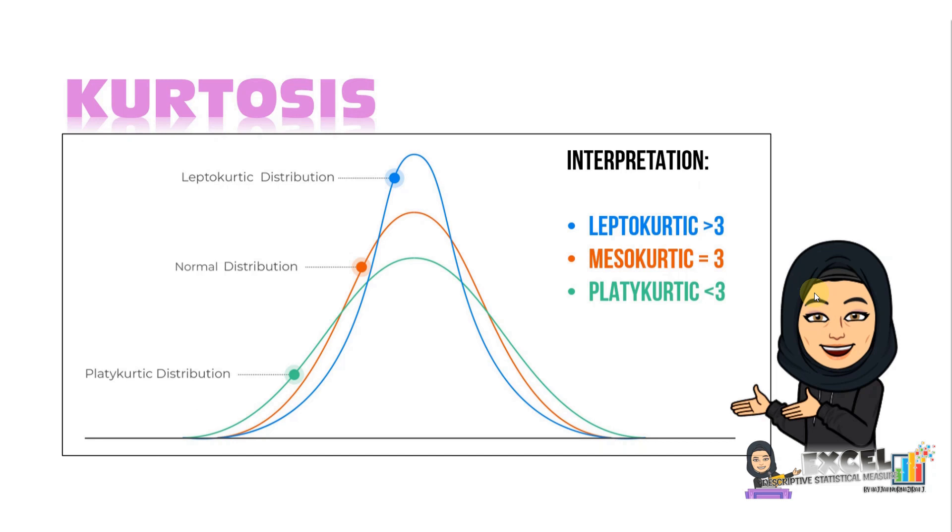As you can see, the curve of leptokurtic is at the highest level. Usually, the result is more than three. For normal distribution, we call it mesokurtic, where the result equals three. Lastly, platykurtic distribution has a result less than three.